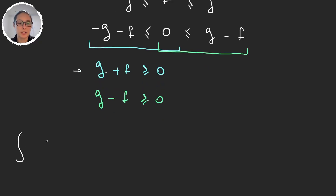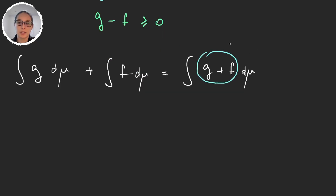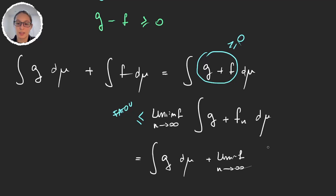Starting with the first inequality: we integrate g plus f. This equals the integral of g plus f, which is a non-negative function, so we can apply Fatou's Lemma. This gives us the inferior limit of the integral of g plus fn. Since the integral of g doesn't depend on n, this simplifies to the integral of g plus the limit inferior of the integral of fn.